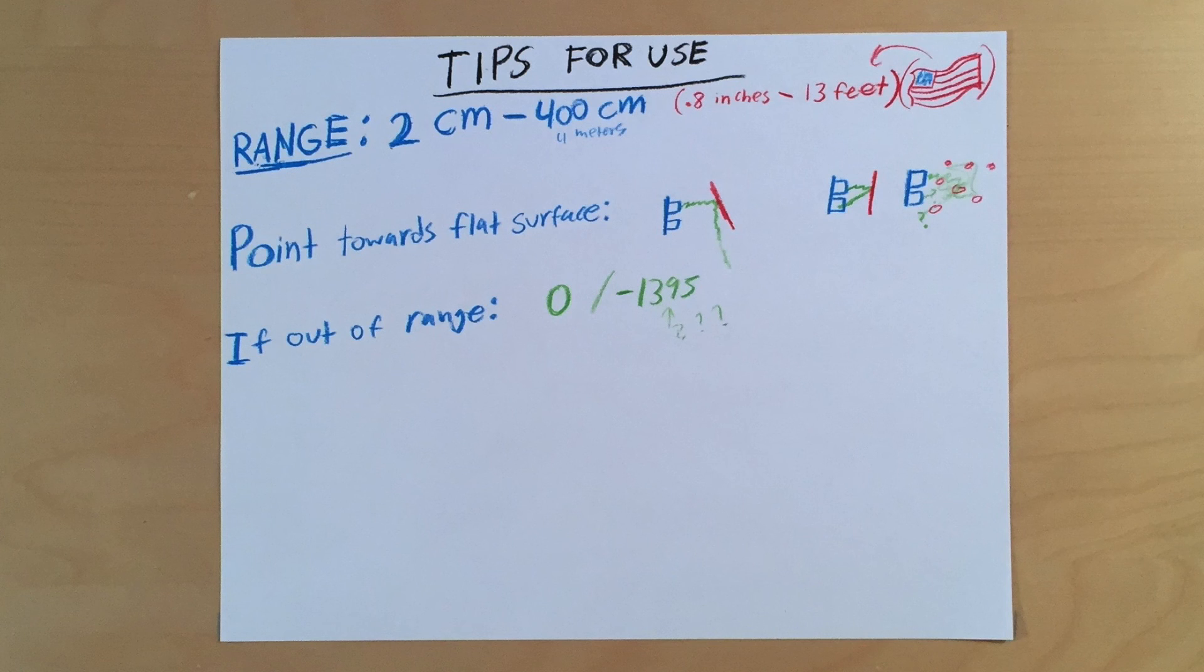Finally, if the object is too close or too far away from the sensor, you'll probably get a value of zero or maybe some random large negative number.